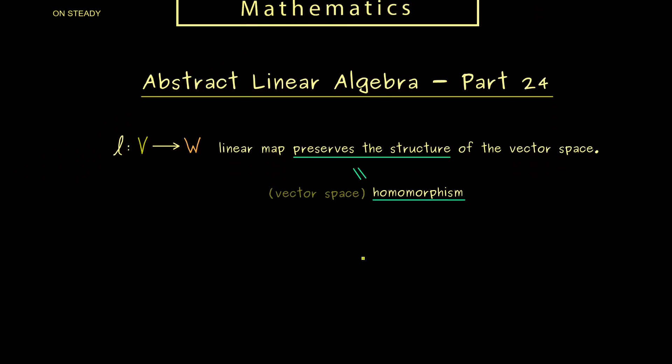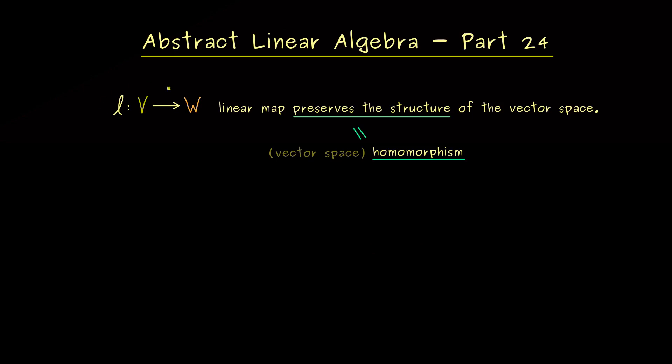an isomorphism is just a homomorphism that works in both ways. This means, to understand that, we have to talk about invertible maps.